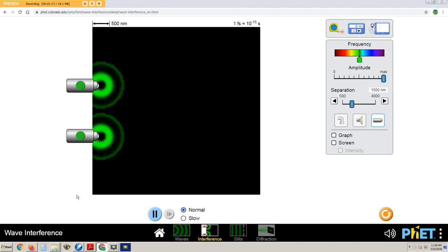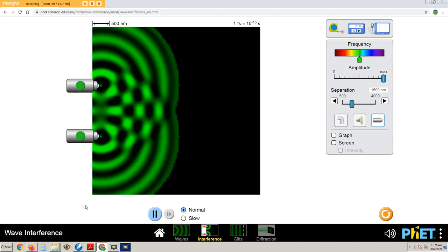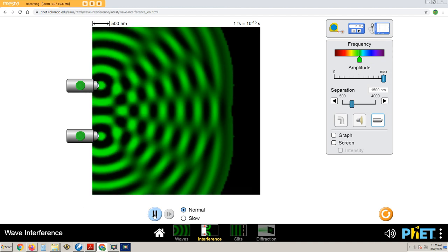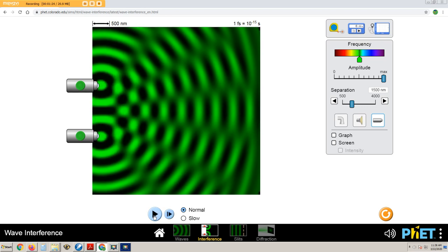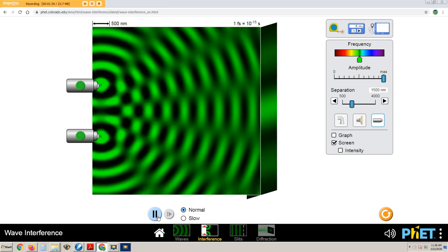These two lasers are emitting light waves. If we place a viewing screen on the right, then we can see bright regions and dim regions.